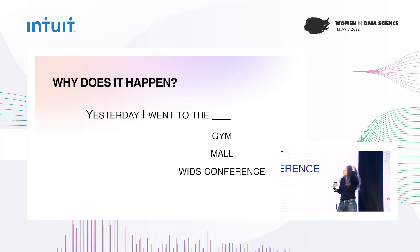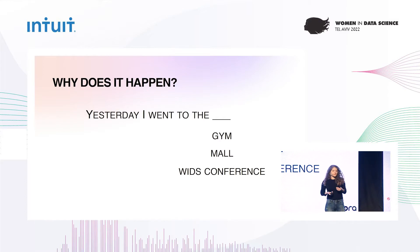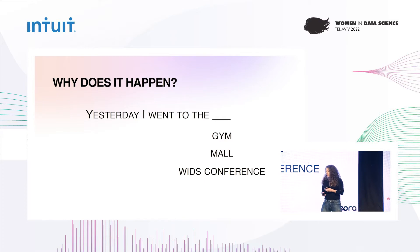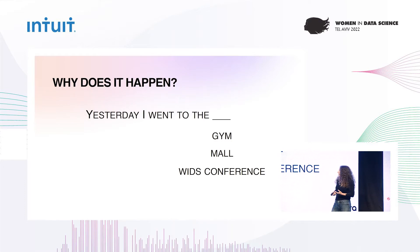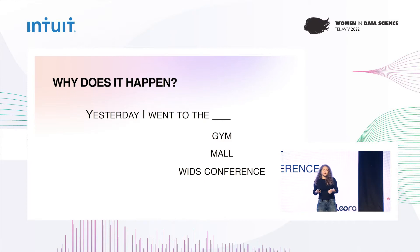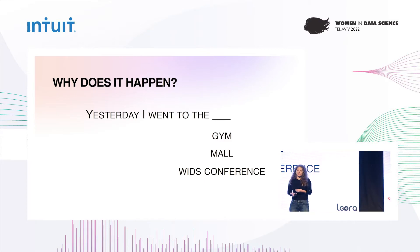The problem is that real natural language, human language, doesn't optimize for probability. It was actually shown that the next words that we say are often unexpected, just to keep things interesting. So what this creates is a discrepancy between the text the model sees on training and the text it generates during inference time, which becomes more and more problematic as the generated text becomes longer and more dependent on the model context.